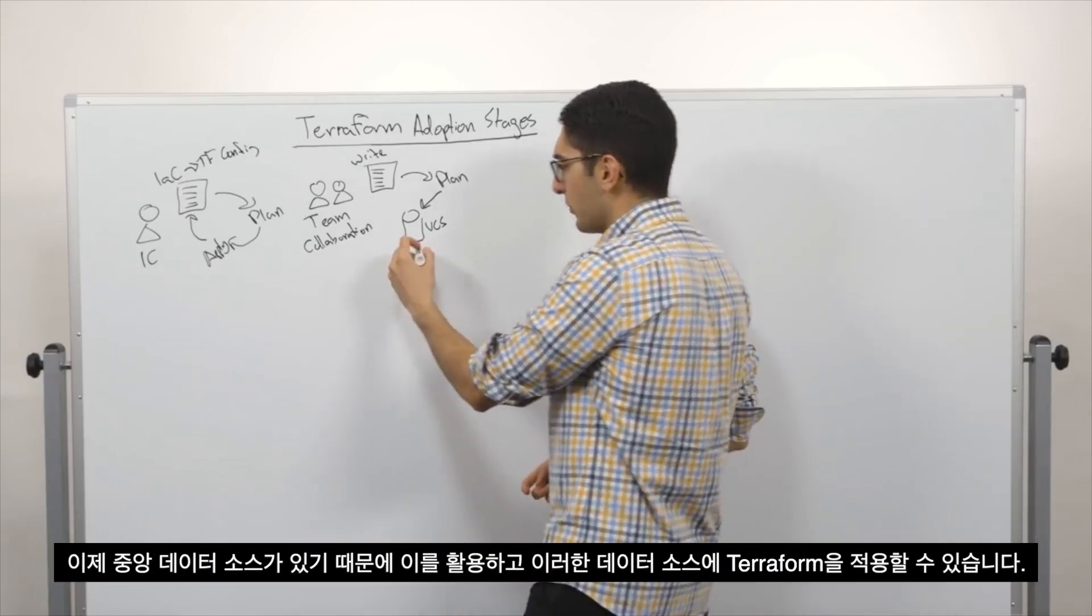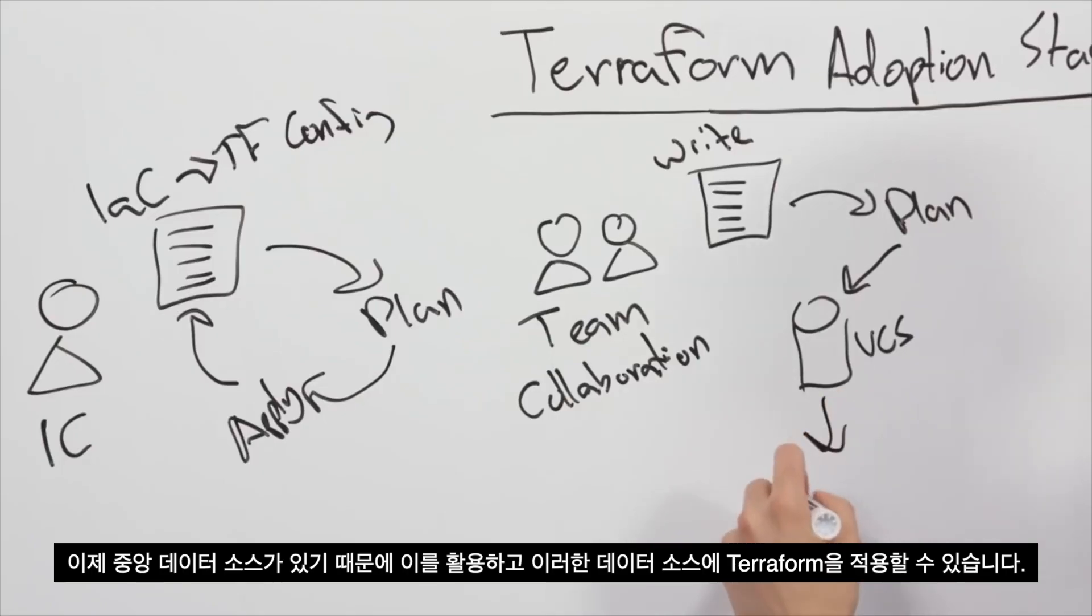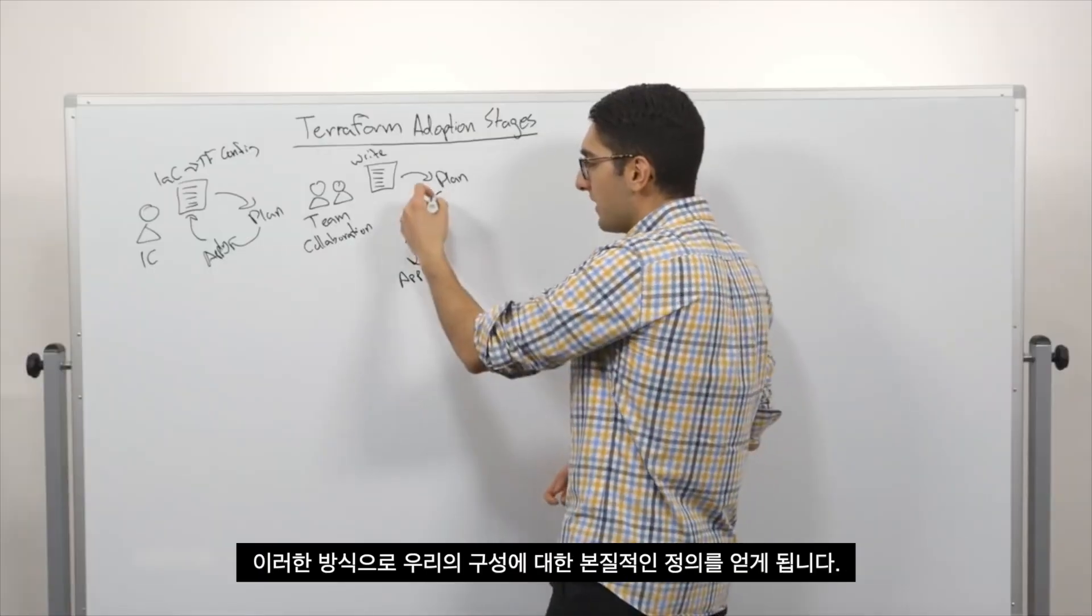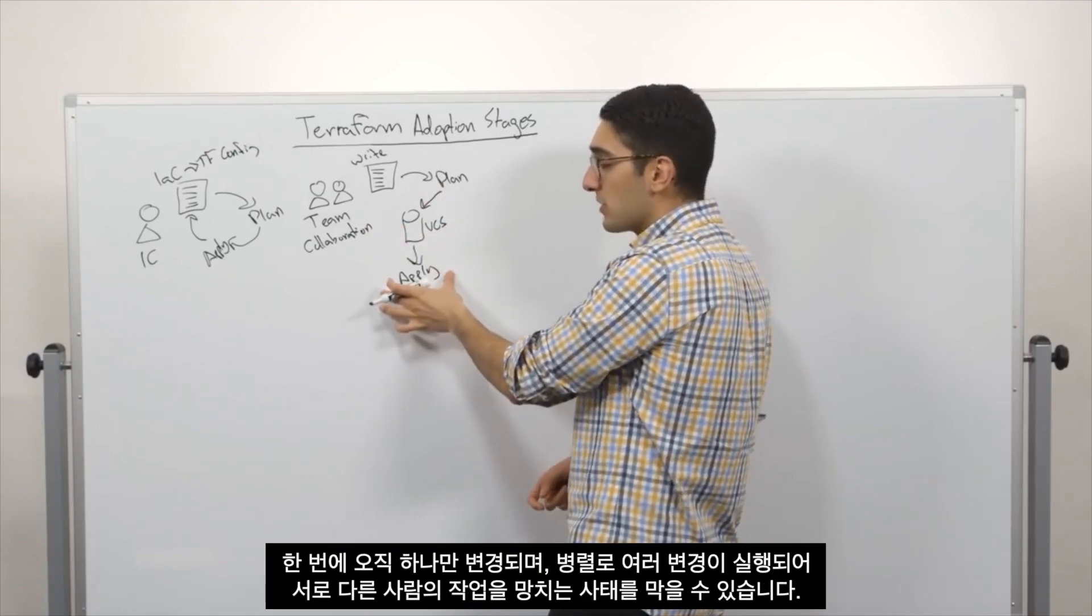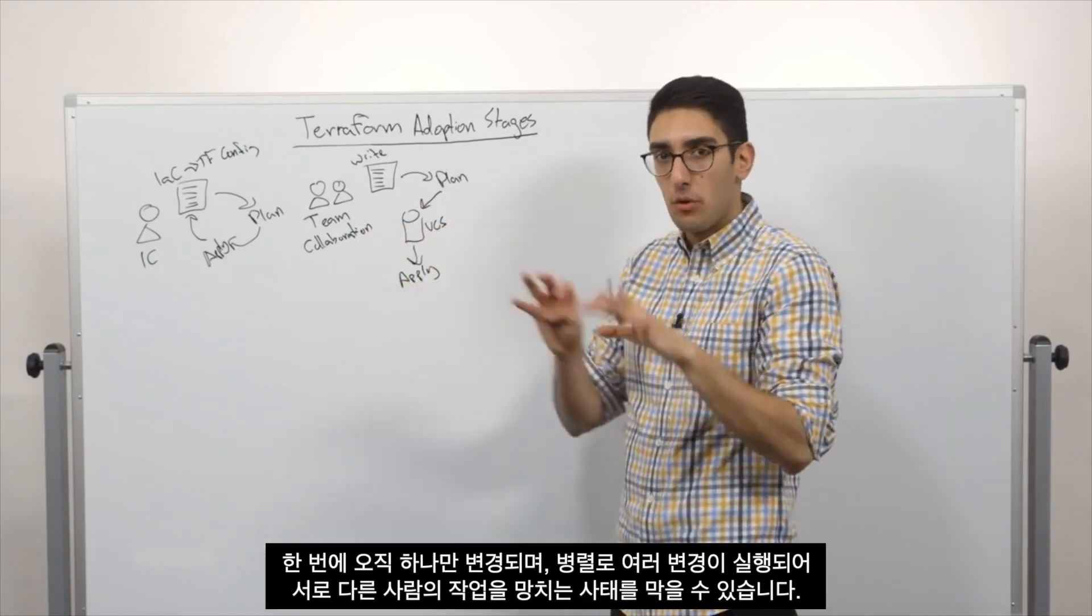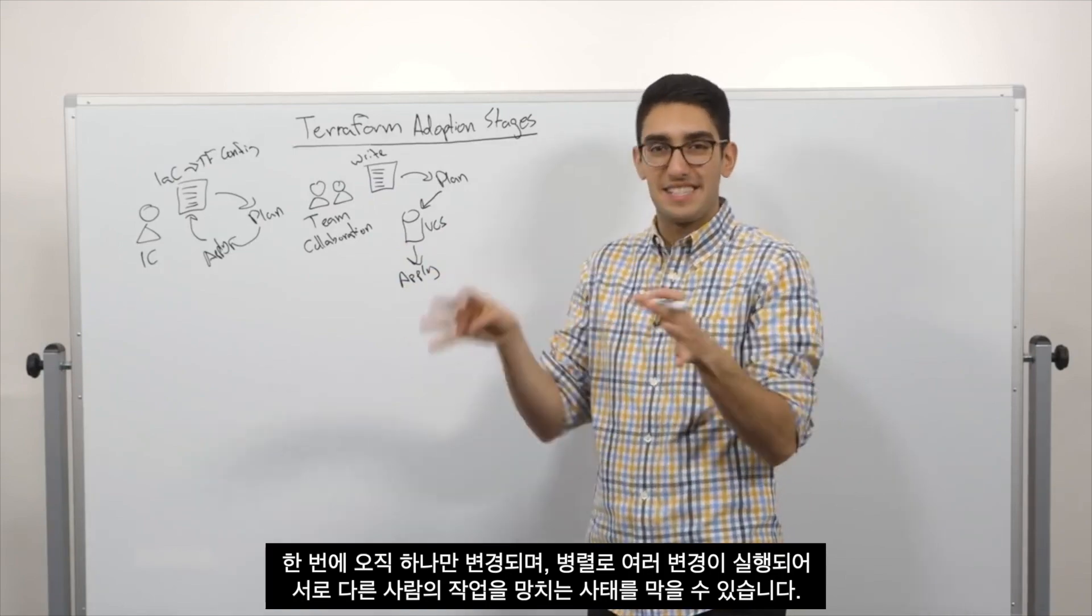So now that we have the central source of truth, we can use that and trigger off of that to apply Terraform off of that source of truth. And so this way we get the sequential definition of what our configuration is. And there's only one change being made at a time. There's not multiple changes in parallel that might step on each other.